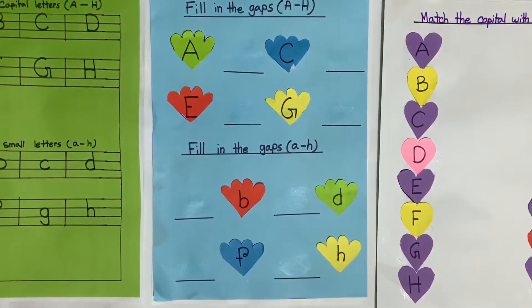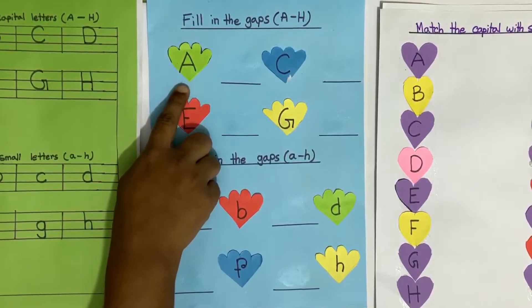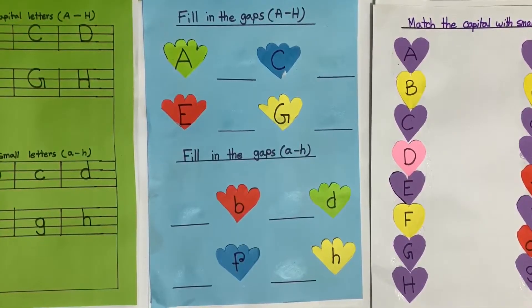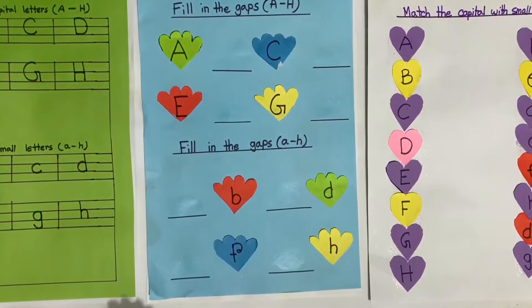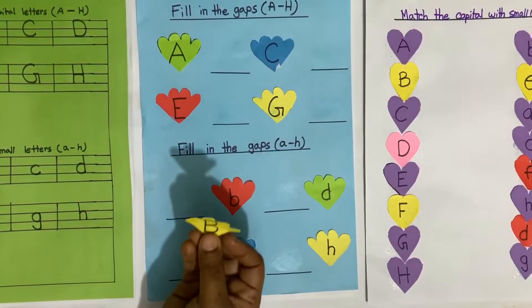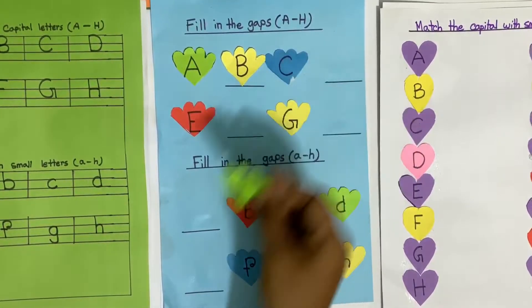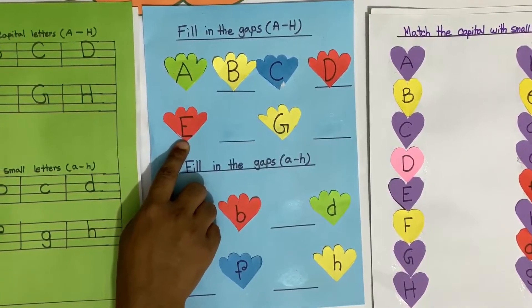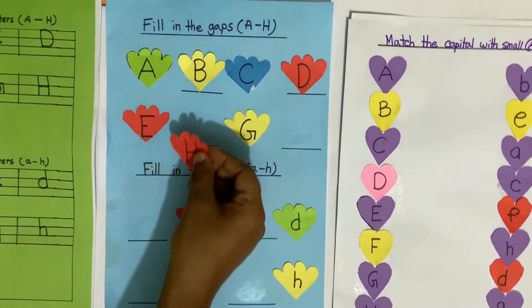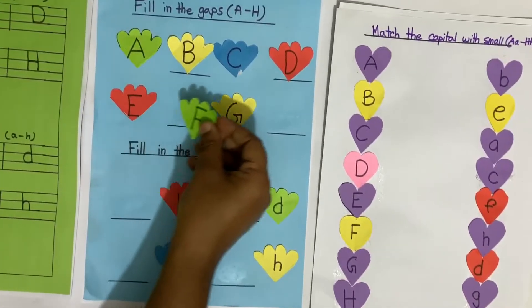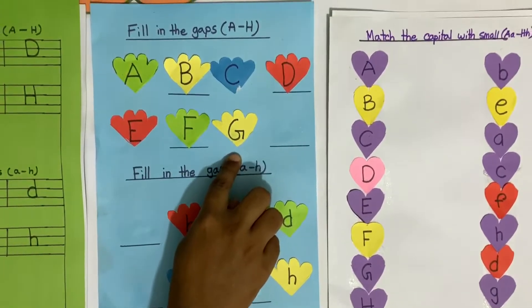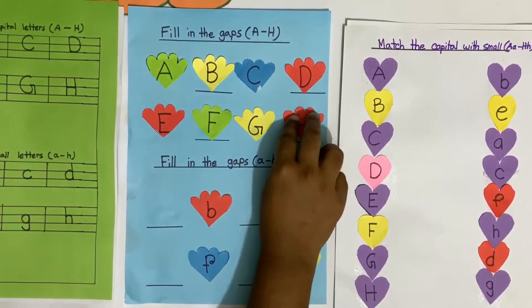We will see the letter. What is it? A. Capital or small? Capital letter. Good. And who can tell me which one is after letter A? B. Good. And this one? C. And after C? D. Good. And this one? Letter E. And after E? F. And this one? G. And after G? H. Am I right?